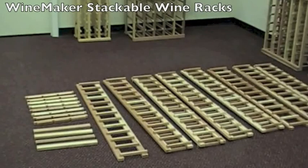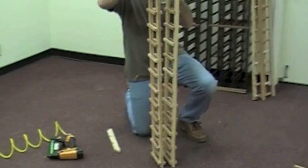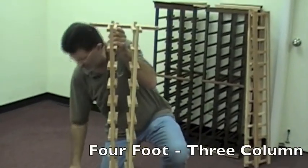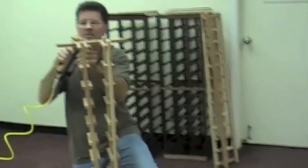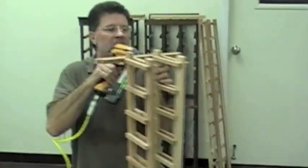This is an assembly video of our winemaker stackable individual wine racks. We have two four-foot three-column individual racks in premium redwood unstained. There's no display rail in this example, so it's all individual bottle slots on this short-depth rack.